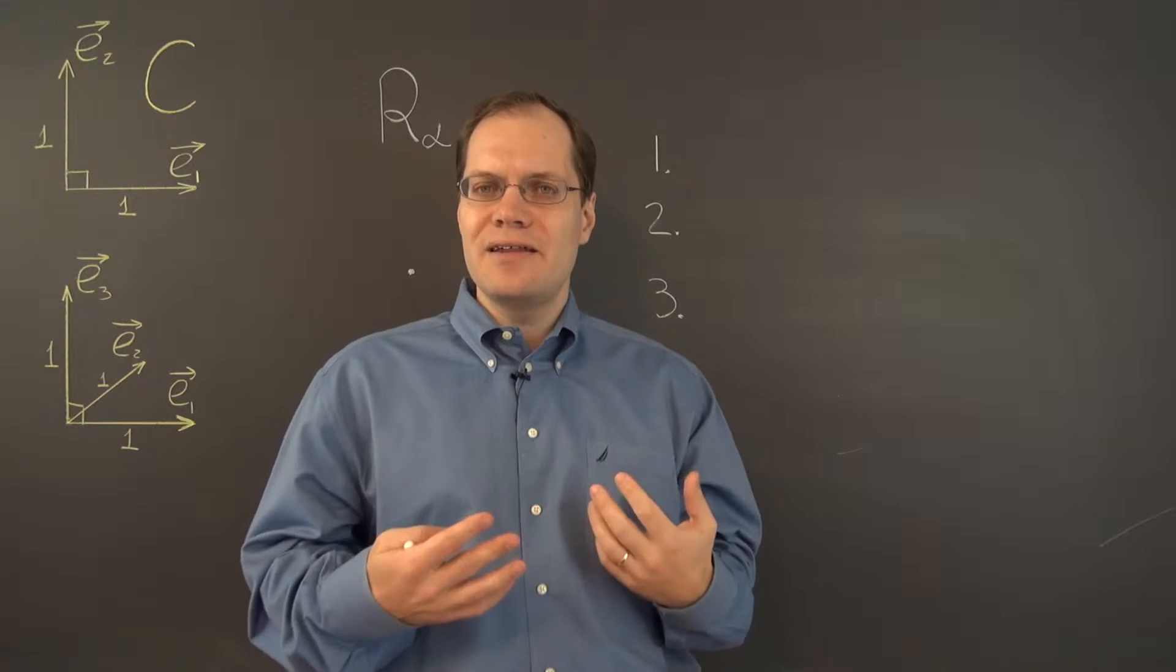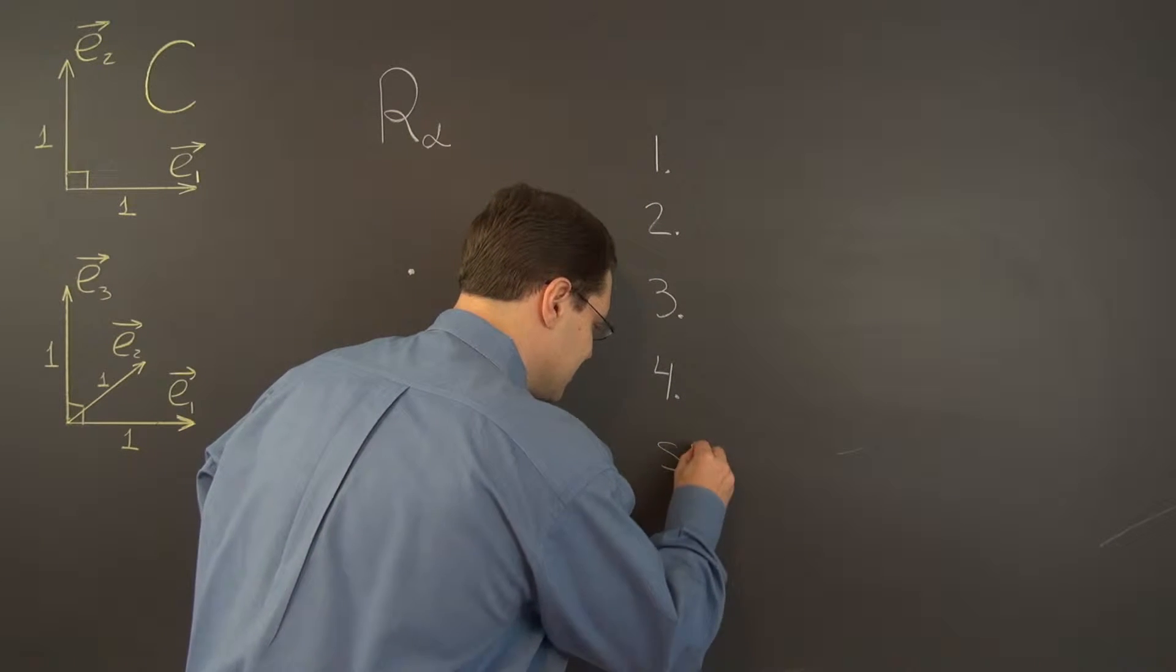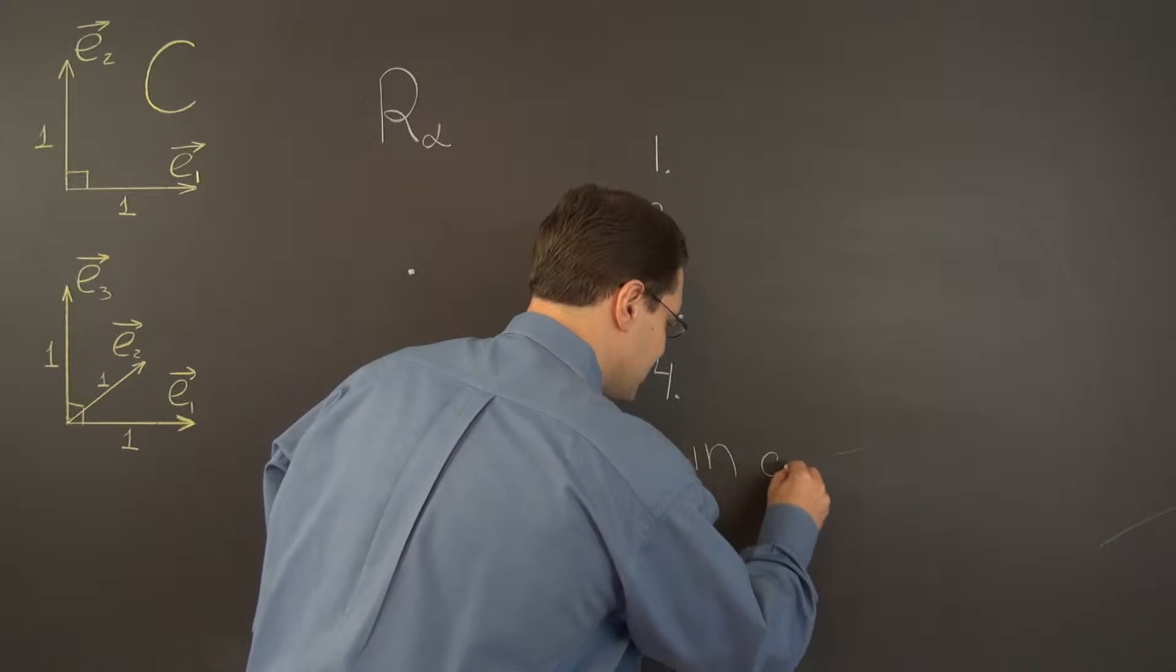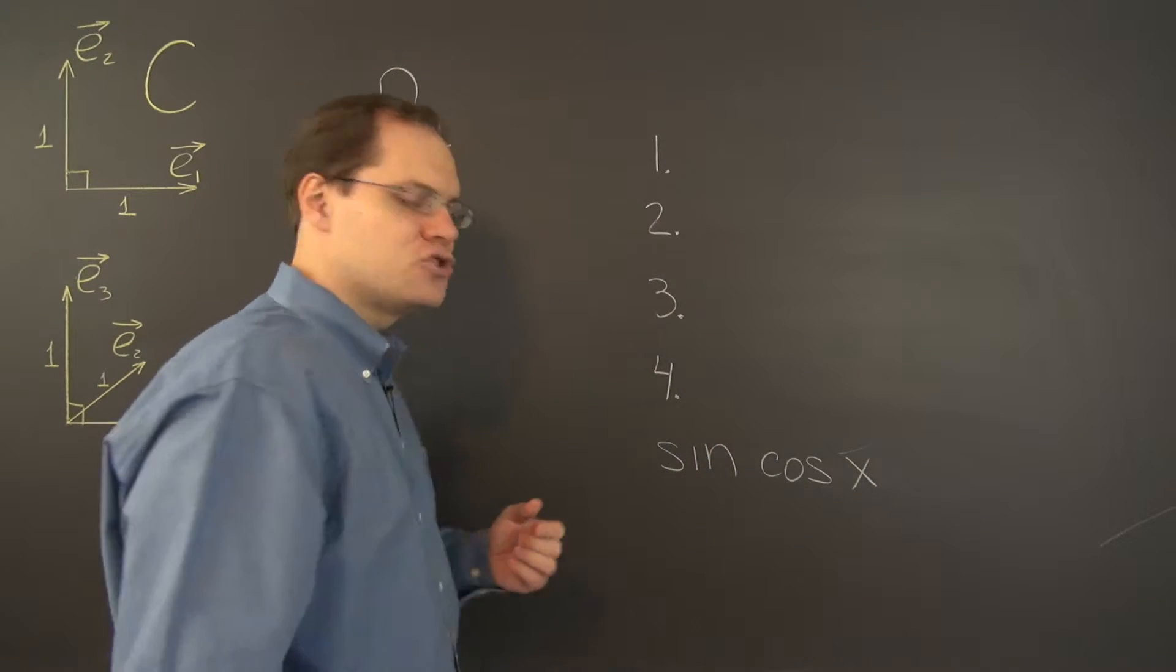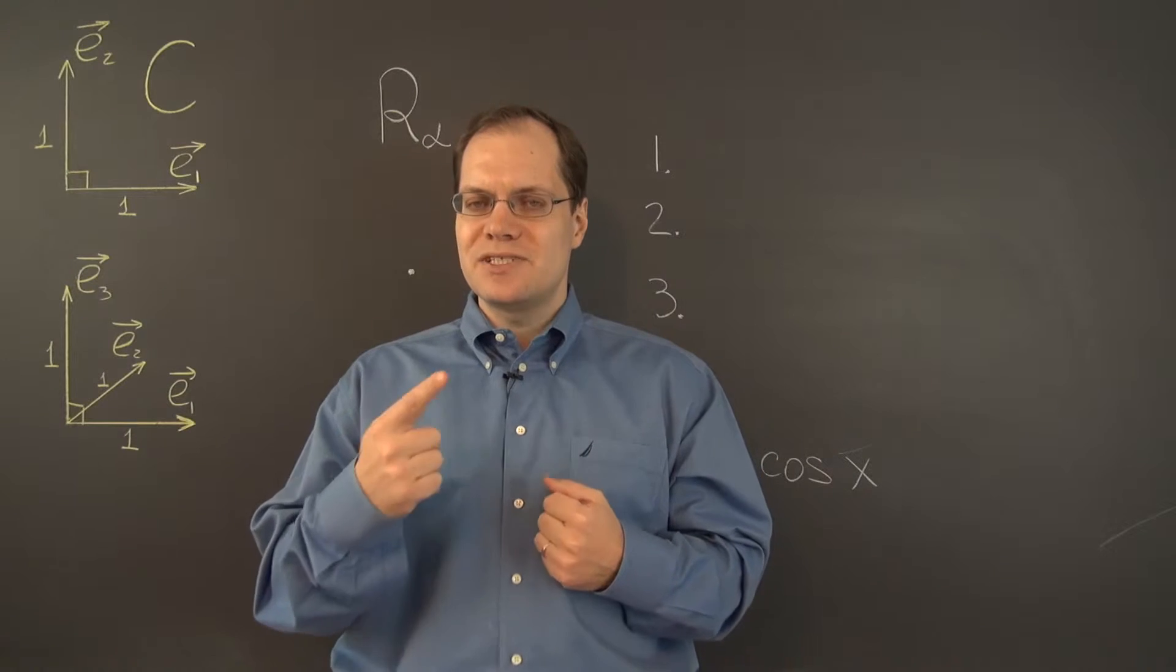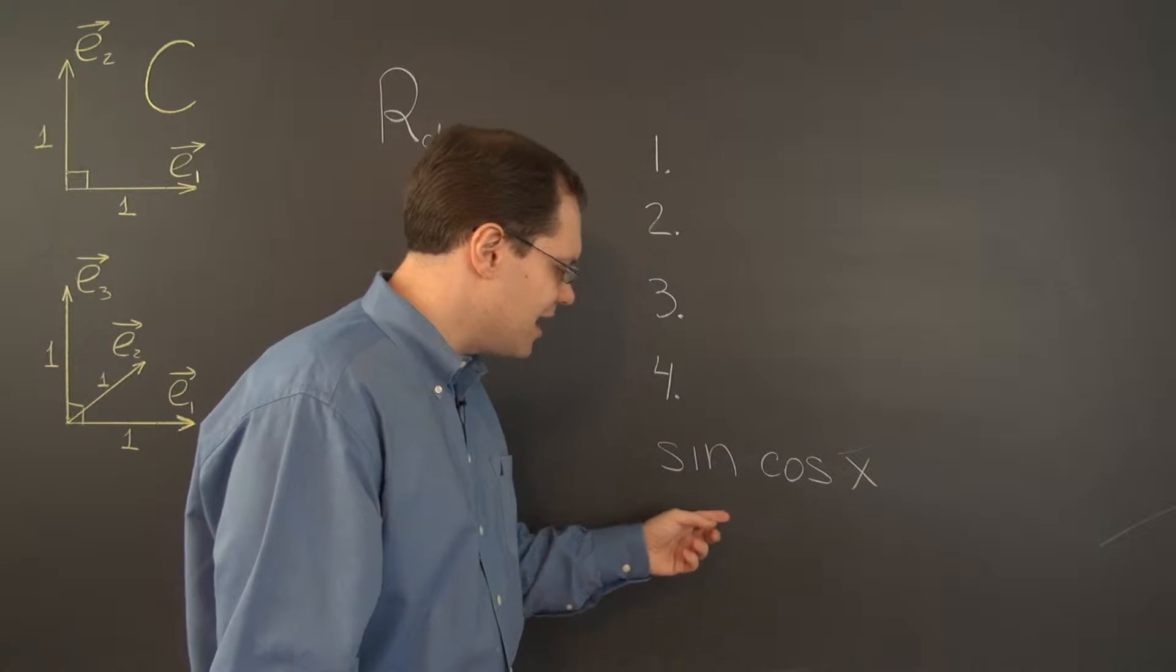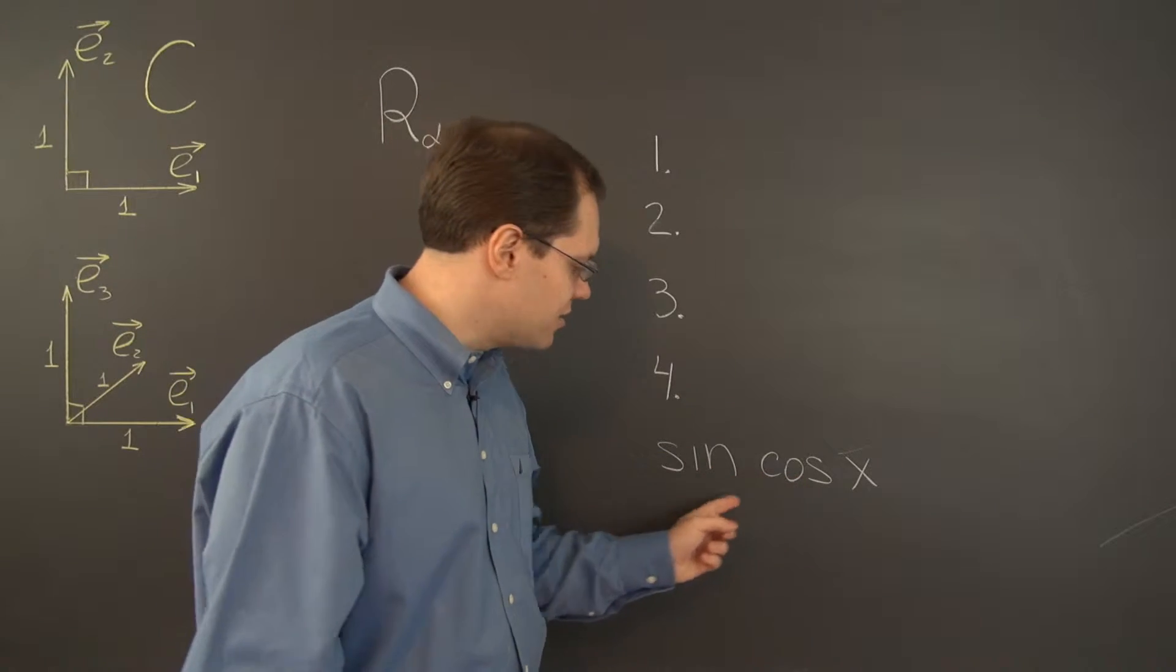I'll just give you a quick example from ordinary functions. Let's consider sine of cosine of x. Of course, we would write it like this. I'll skip parentheses. Sine of cosine of x. So cosine comes first, sine comes second. But nevertheless, cosine appears on the right and then sine appears on the left.